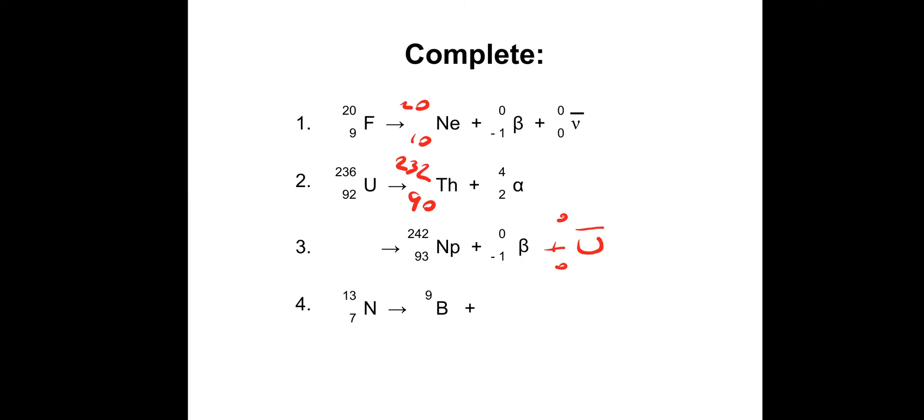So this bottom one, we've got nitrogen. And then we've got a 9 on top. So 13 minus 9 is 4. So this must be alpha decay. 4 on top. The 9 and the 4 gives you the 13. Alpha's a 2. So a number that adds to 2 to make 7 is 5. Hopefully that went okay.